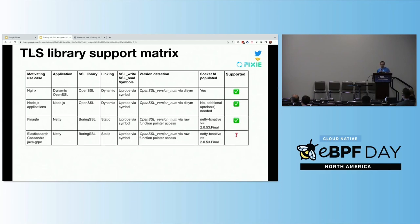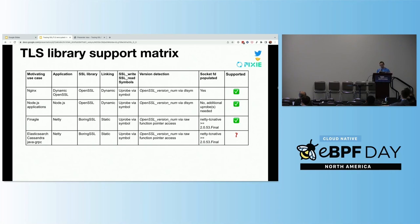Moving on to Netty. For Finagle, the library is BoringSSL with static linking. We are able to attach the uprobe with the SSL_write and SSL_read symbols. For version detection, we use the raw function pointers approach. The socket file descriptor is populated if you're using a TC Native version greater than or equal to 2.0.5.3. For other Netty use cases, all of the other details are the same and we believe they should be supported, but this is yet to be tested. This is something that could be really powerful — one use case supporting many popular projects.